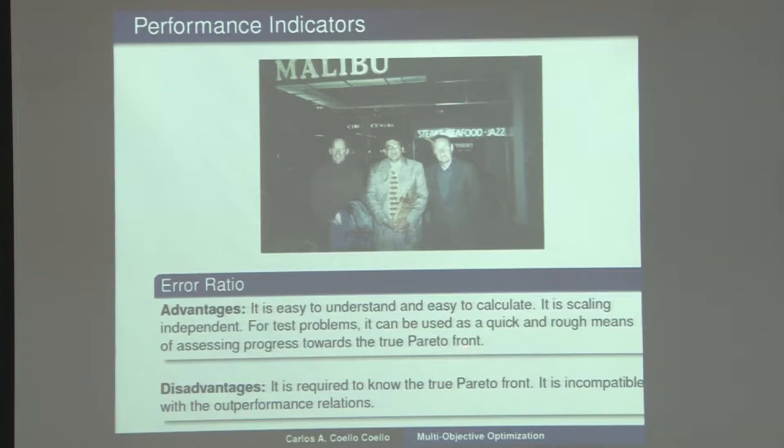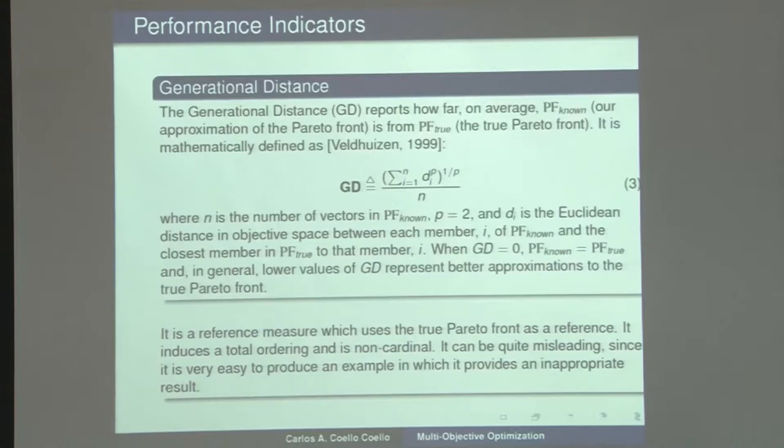Advantages of the error ratio: it's easy to understand, easy to calculate, any student can do this, and it is scaling independent. It can be used in some cases as a quick and rough means of gauging convergence. The disadvantage, of course, is you need to know the true Pareto front, and it is not a reliable measure because it's incompatible with the outperformance relations.